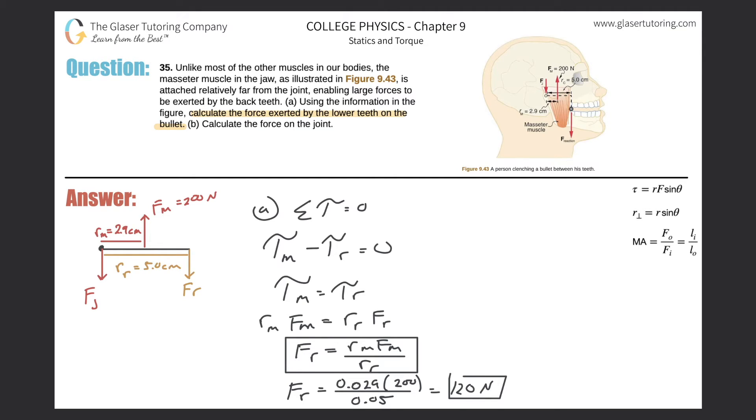Now for letter B. It says calculate the force on the joint, F_j. The sum of the forces in the problem should equal zero, as we know. This is now letter B.